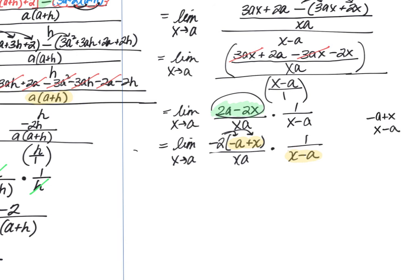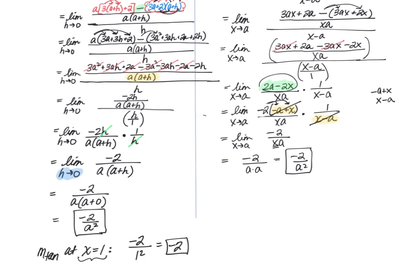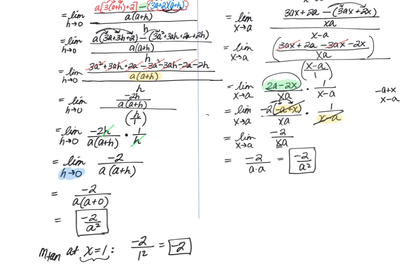So we're left with the limit as x approaches a of negative 2 over x a. And now we can do direct sub. Substituting in a in place of x gives us negative 2 over a times a, which is negative 2 over a squared. So you realize that we do end up getting the same exact answer that we got using the other method, just with very different algebra.